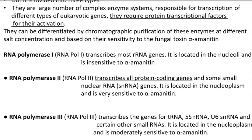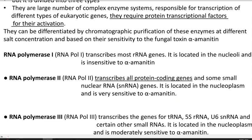RNA polymerase I transcribes most of the rRNA genes; it is located in the nucleolus and is insensitive to alpha-amanitin. Polymerase II is the most important polymerase of the eukaryotic system, associated with transcription of most protein-coding genes and also transcribes small nuclear RNA genes; it is located in the nucleoplasm and is very sensitive to alpha-amanitin. The third polymerase transcribes genes for transfer RNA, 5S rRNA, and other small RNA molecules; it is located in the nucleoplasm and is moderately sensitive to alpha-amanitin.